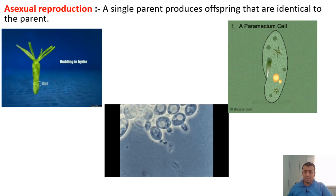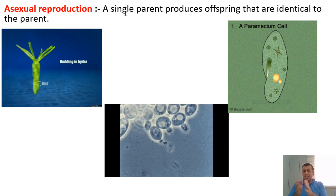In asexual reproduction, a single parent produces offspring that are identical to the parent — the baby and parent look the same. Because it is a single parent, cells simply divide into cells. We call that process asexual reproduction.